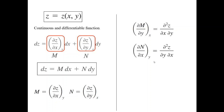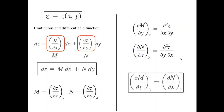Looking at these two carefully, they represent the same mixed second-order partial derivative — only the order of differentiation differs. For a continuous and differentiable function, both are equal. So we conclude that ∂M/∂y = ∂N/∂x. This is the key mathematical result we need to derive Maxwell's equations. We'll keep this in the background and invoke it once we cover the thermodynamic aspects.